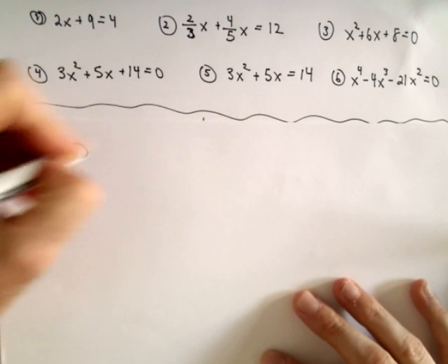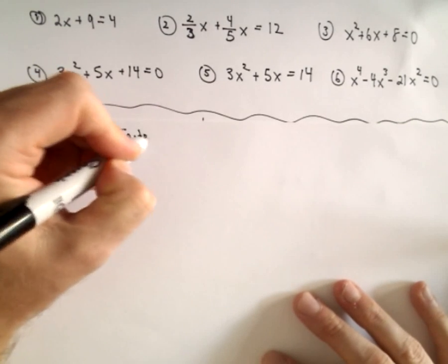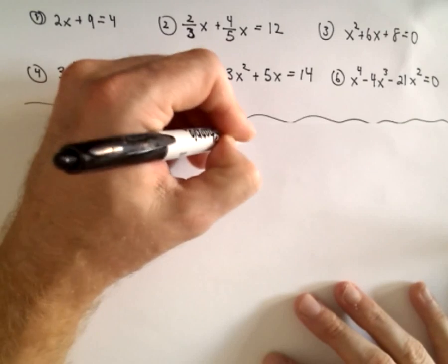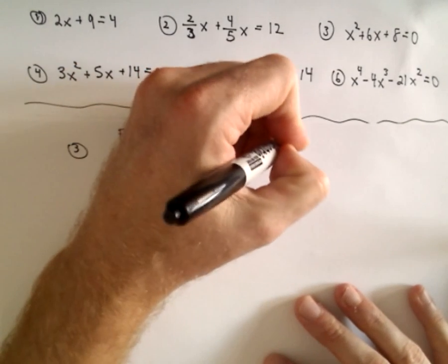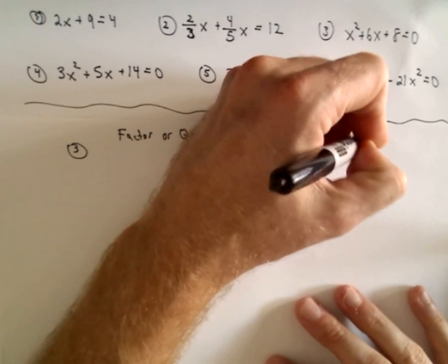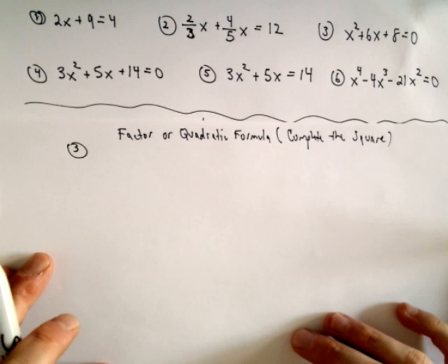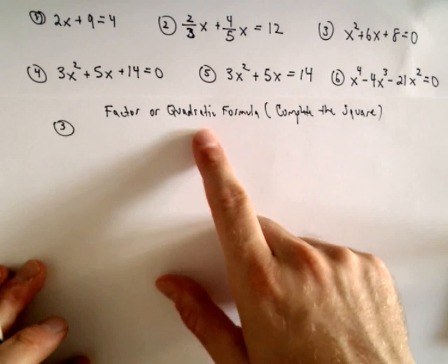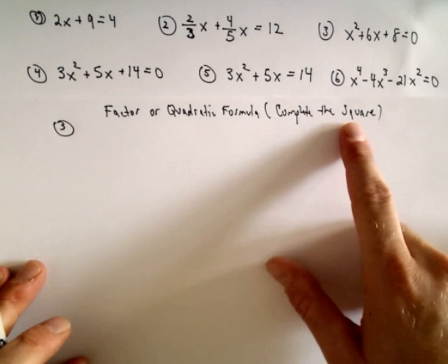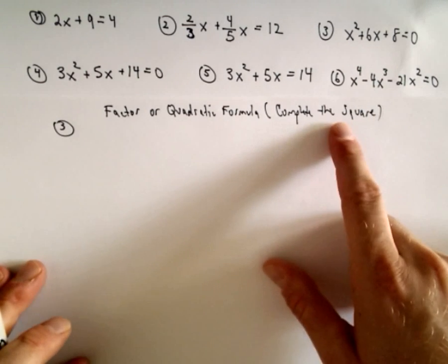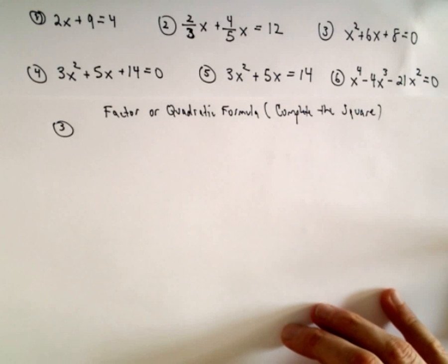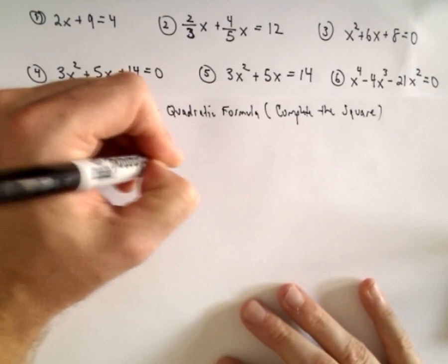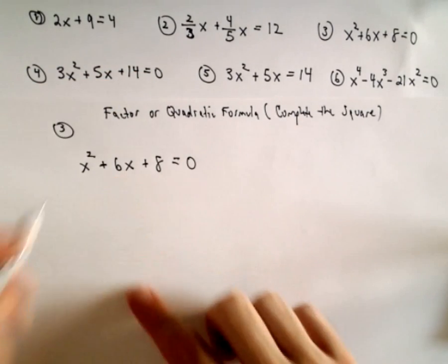Number 3 is a simple quadratic. To solve quadratics, the only things I ever do are either factor or use the quadratic formula. You can also complete the square, or even try to graph it if you're allowed to use a graphing calculator. But to me, you want to be able to factor, use the quadratic formula, or complete the square. Completing the square is probably a bit overkill just to solve quadratics, but you will have to complete the square in other places in calculus — it's a useful algebraic technique. But this particular one factors nicely.